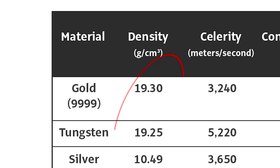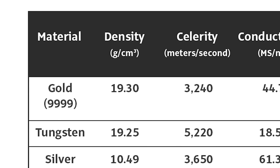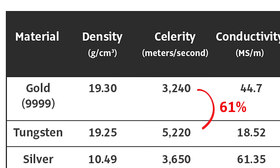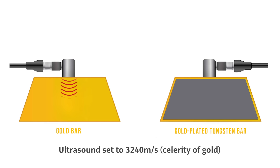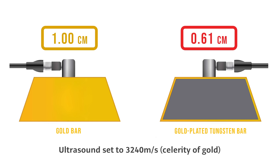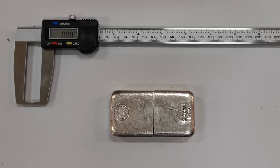For example, when gold and tungsten may have similar densities, you can see from this table that sound travels at 5,220 meters per second in tungsten, but only 3,240 meters per second in gold. That's a difference of 61%. This makes it very easy to detect the gold-plated tungsten bar, because an ultrasound test on a one-centimeter gold bar would return an ultrasound reading of only 0.61 centimeters. This principle also applies to silver.